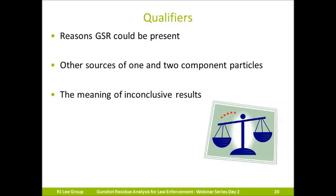Our lab includes three qualifying statements in GSR reports. Number one: GSR can be deposited by discharging a firearm, being in the proximity of a discharging firearm, or coming into contact with a surface or object that has GSR on it — when characteristic particles are confirmed, each of these is a likely possibility. Number two: two-component and one-component particles are found in GSR but may also originate from other sources, so they cannot be termed characteristic but rather consistent or commonly associated with GSR.